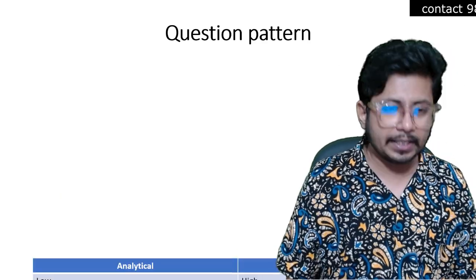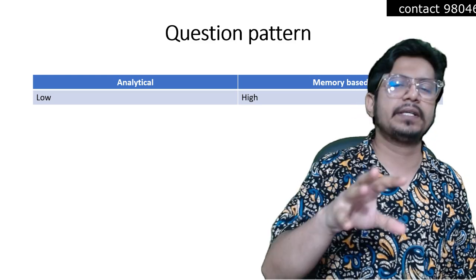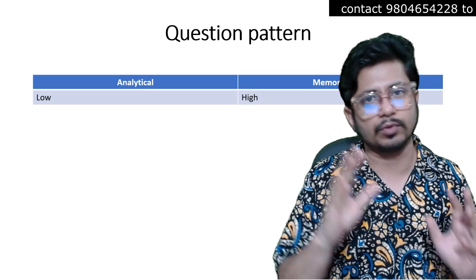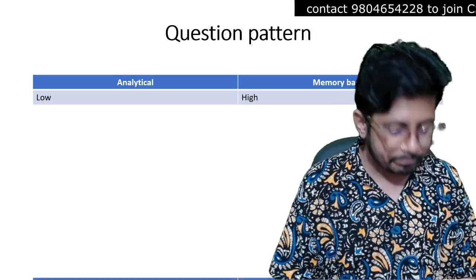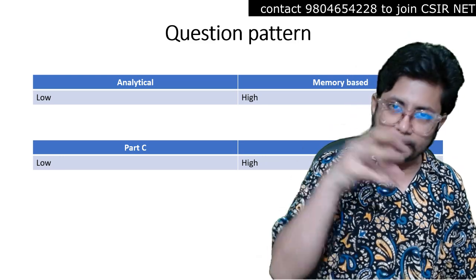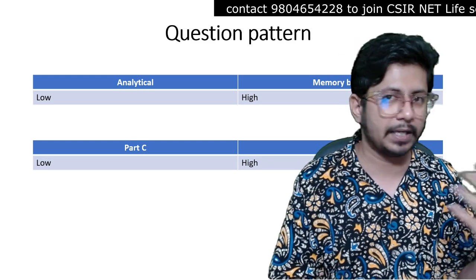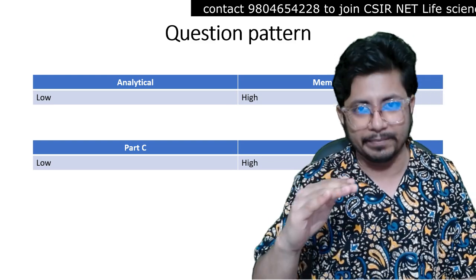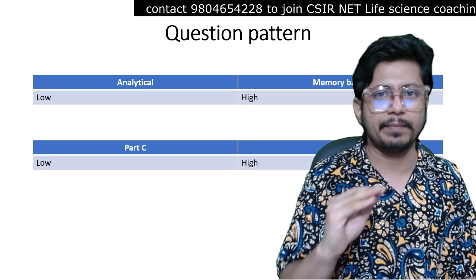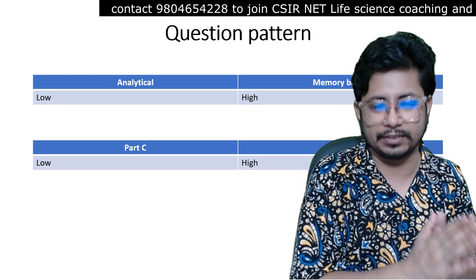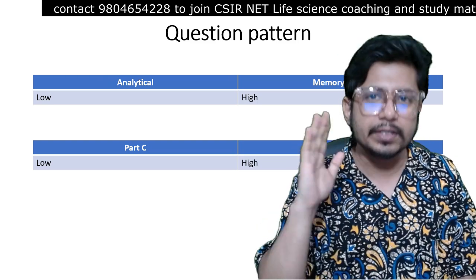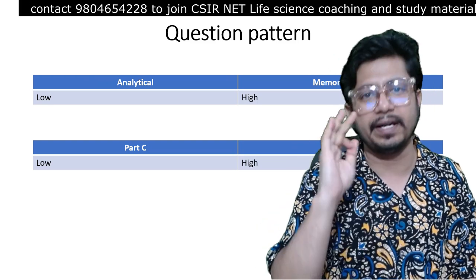Now let's move on to the question pattern. CSIR NET Unit 12 applied biology questions are mostly memory-based — less questions will be analytical. Between Part B and Part C, more weightage from Unit 12 will be Part B questions, meaning the questions will be direct memory type rather than analytical Part C types. You can clearly see this pattern in the CSIR NET examination.